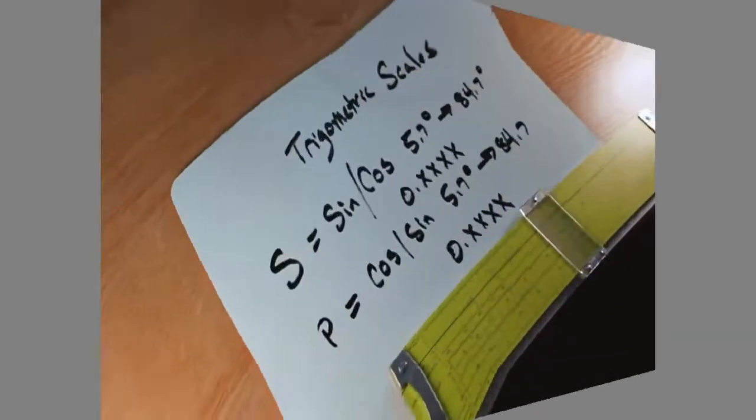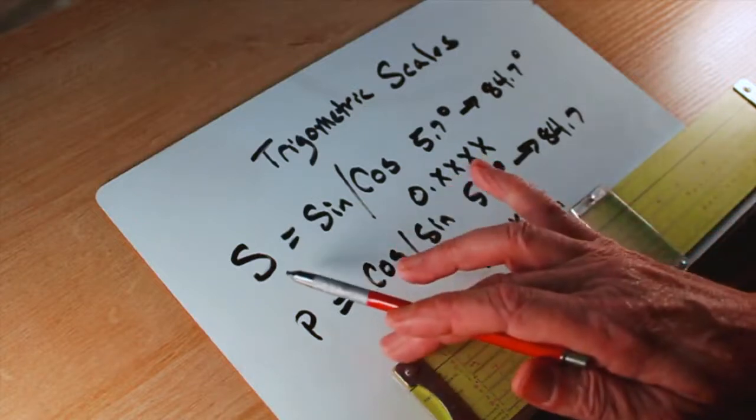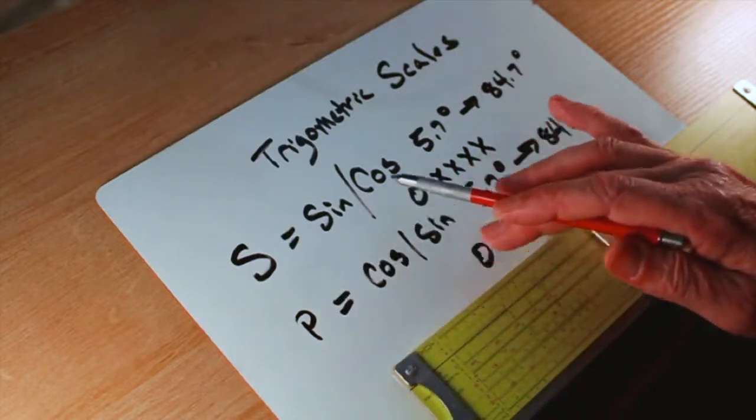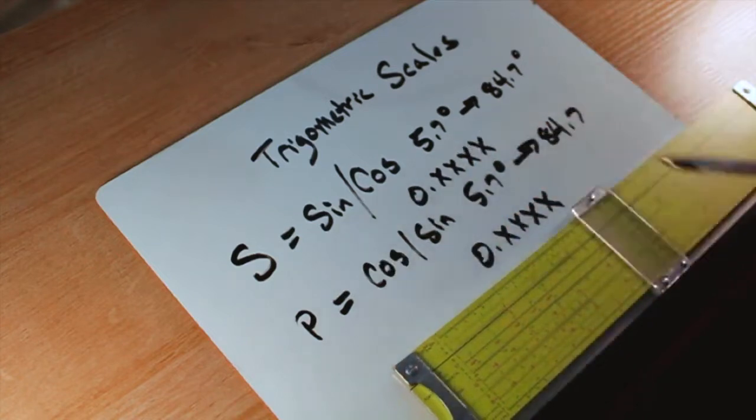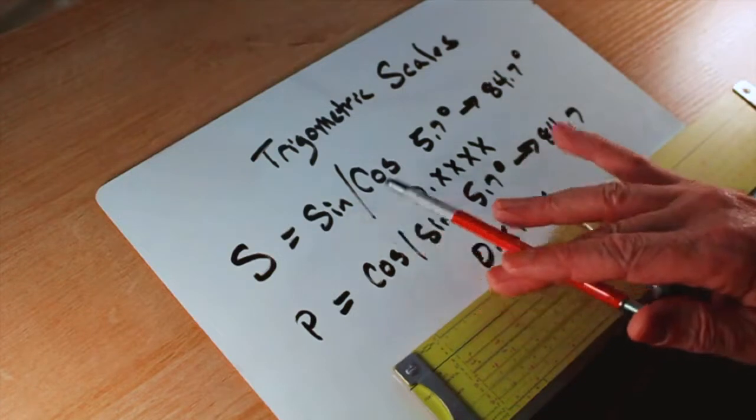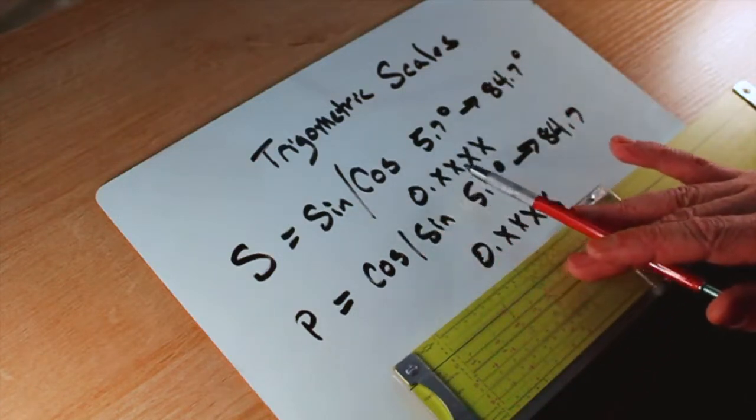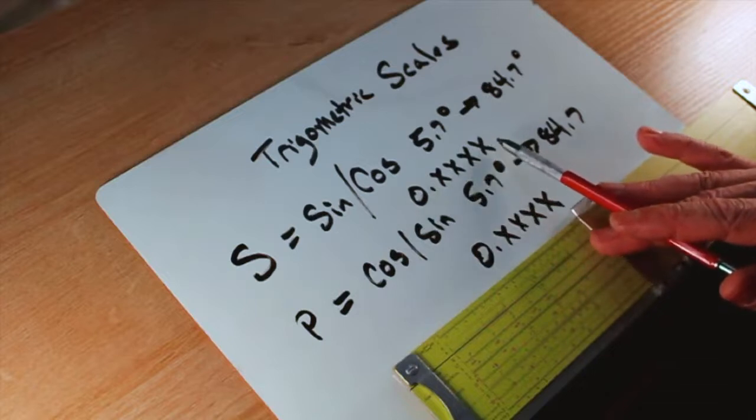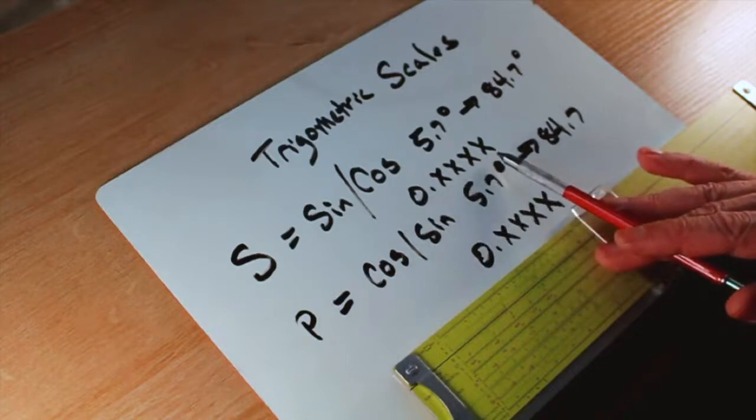Let's go over the two main ones. The first one is going to be the s-scale. That's sine and cosine for an angle between 5.7 and 84.5 degrees. What's the meaning of this range? If you look at the sine and the cosine for these angles, they'll take the form of 0.0 something. They're put together on the slide rule, so you know where to put the decimal place.